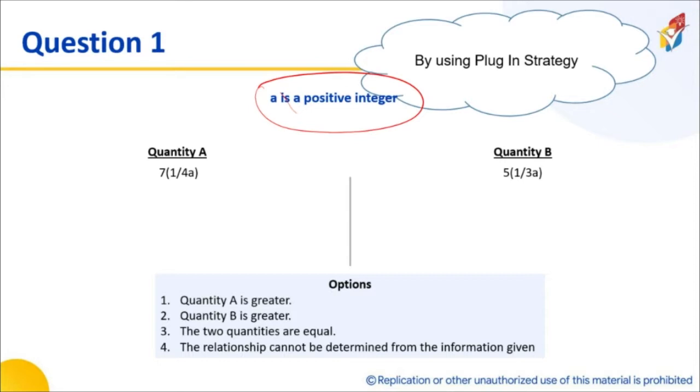What do we do? One way of doing it is you can divide. Let's see what happens if you divide quantity A by quantity B. It would be 7 by 4a divided by 5 by 3a. How much would this be? This would be 7 by 4a into 3a by 5.